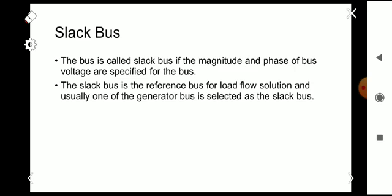The bus is called a slack bus if the magnitude and phase of the bus voltage are specified for the bus. The slack bus is a reference bus — it can be derived from a generator bus itself. One of the generator buses is actually converted to the slack bus in the process.